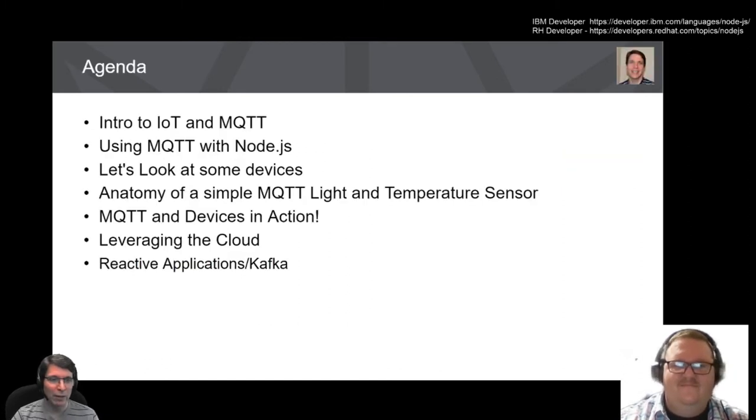So just before we get started, a little bit of an idea of what we're going to go through. We're going to start with a brief introduction to IoT and MQTT. So what are they? Why are they important? We'll look at using MQTT with Node.js because they're a great fit. We'll take a look at some real physical devices. We'll talk about the anatomy of a simple MQTT light and temperature sensor that might fit one of your business use cases. We'll then show you MQTT and devices in action in a demo. We'll then touch on leveraging MQTT with the cloud. And finally, we'll finish up with a few thoughts on reactive applications and Kafka.